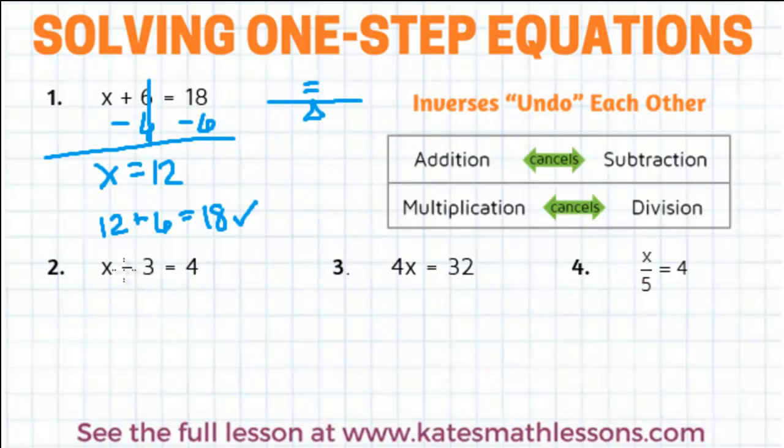In order to get x by itself, we need to get rid of this minus 3. To undo subtracting 3, we need to use the inverse of subtraction. So to cancel out subtraction, we need to use addition.